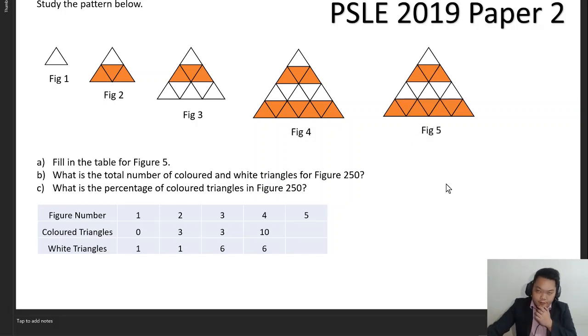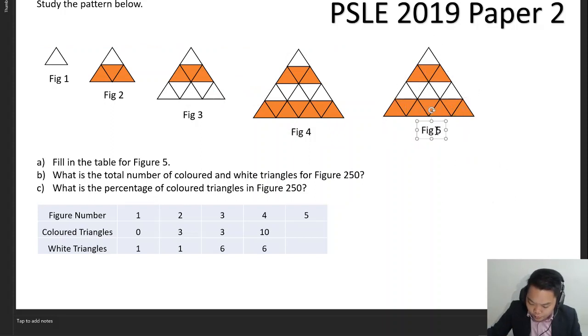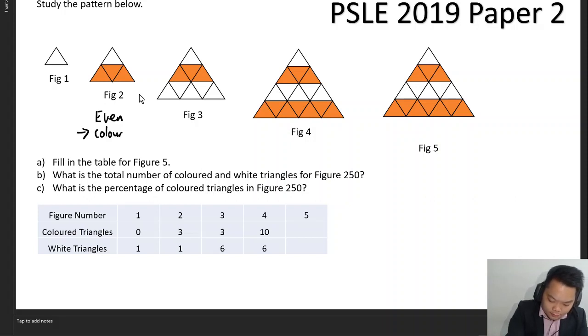In figure five, one of the ways that you can deal with a pattern is to break it down first. How does this figure change? The way it changes is that in every even row, colored triangles will be added, and every time it is odd, the white triangles will be added.